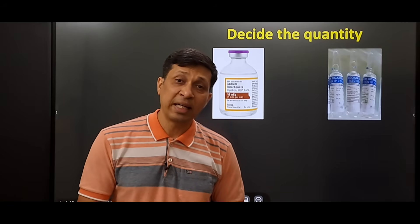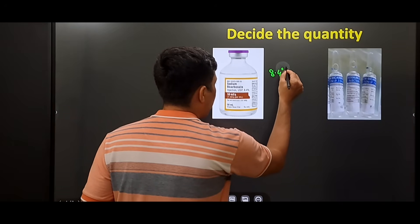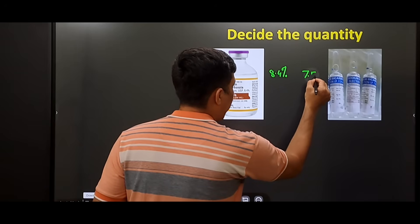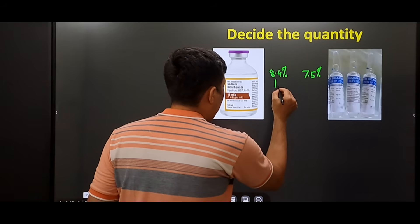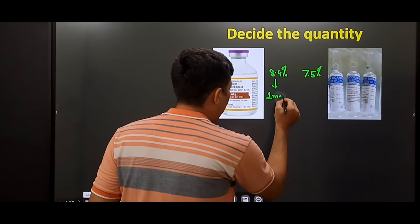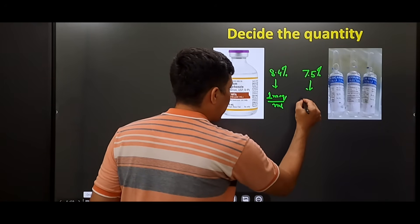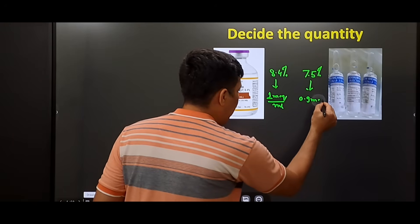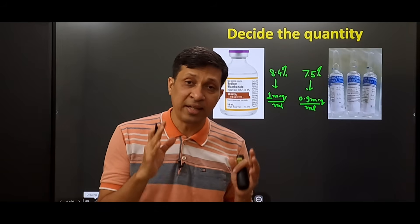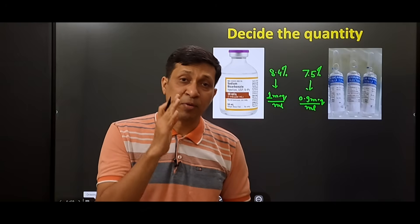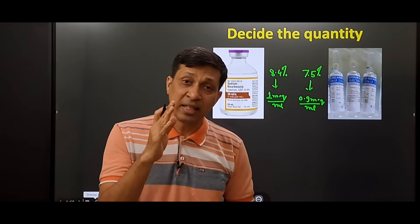This drug is available in two types of concentrations. The first is 8.4% and the other is 7.5%. In case of 8.4%, there is 1 milliequivalent of drug in each ml. In 7.5%, there is 0.9 milliequivalent of drug in each ml. These are the concentrations available in India. If you are from another country, check the concentration before giving this drug.